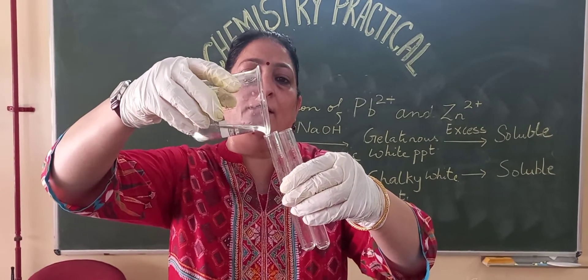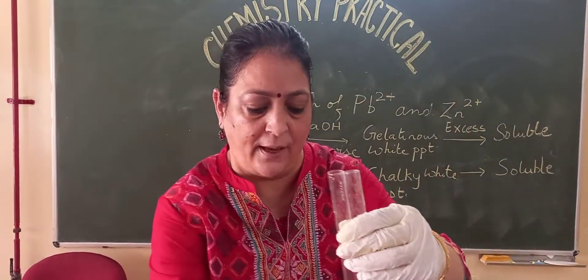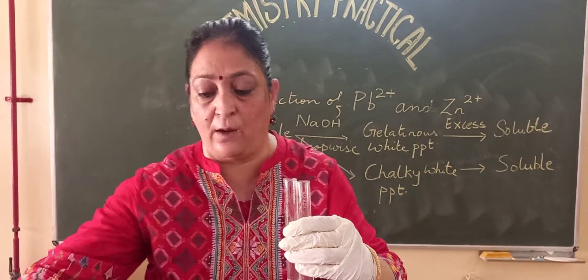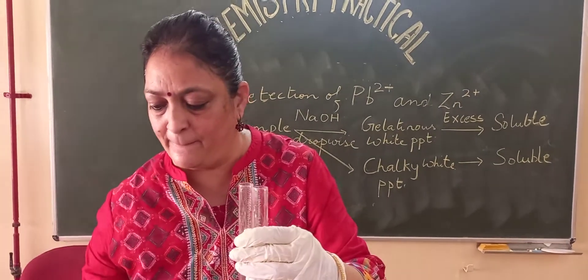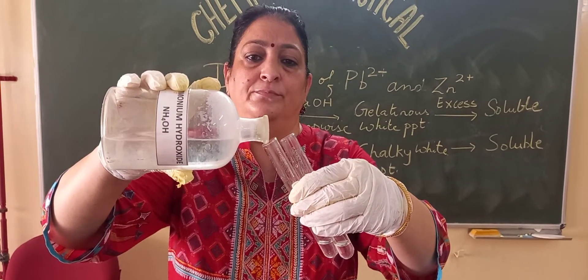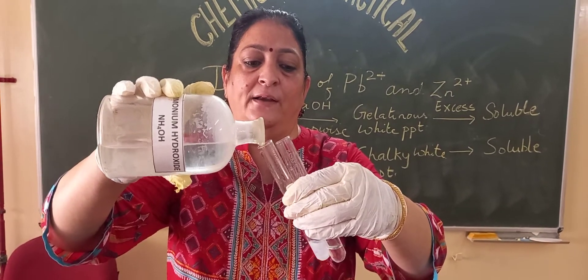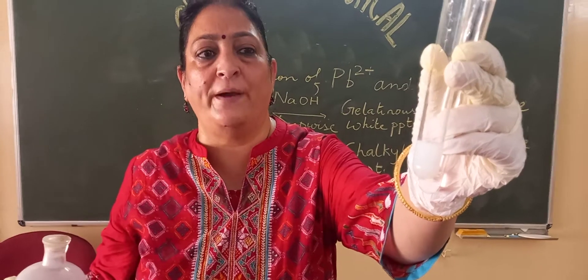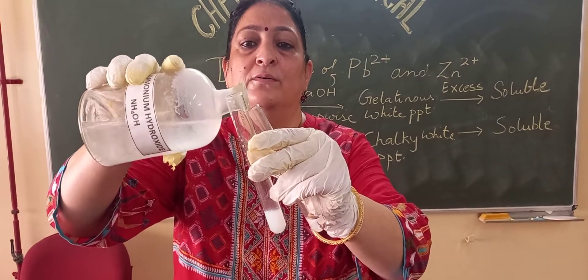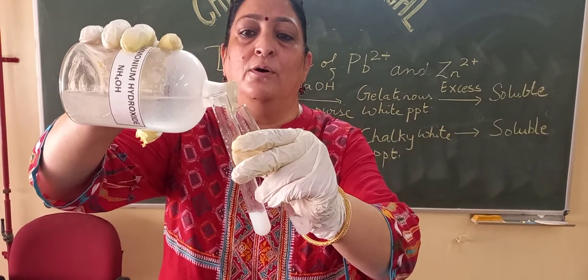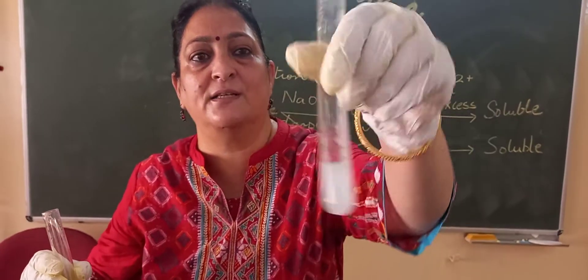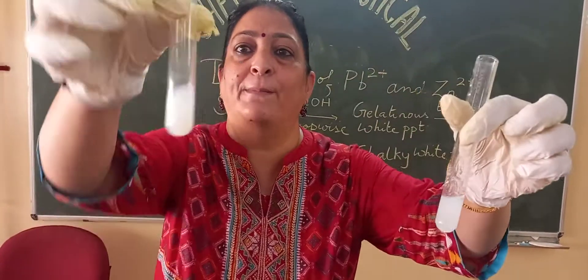The procedure is the same — take a small amount of sample. First I am putting lead, and then I am putting the zinc water-soluble salt. Now, instead of NaOH, I use ammonium hydroxide and add it drop by drop. Again I get a chalky white precipitate with lead. I add ammonium hydroxide to the zinc salt as well and I get the same observation — a gelatinous white precipitate. You can see it is sticking to the walls, whereas with lead there is no sticking — just chalky white precipitate. There is a clear difference.